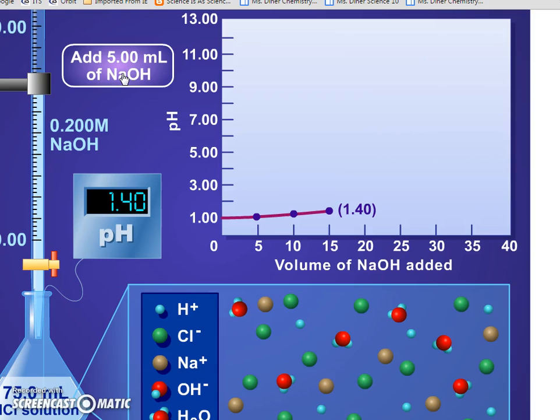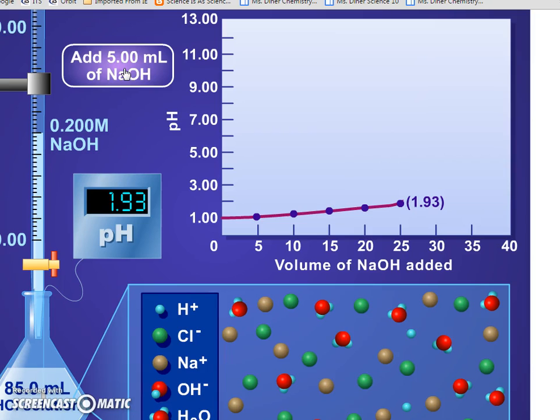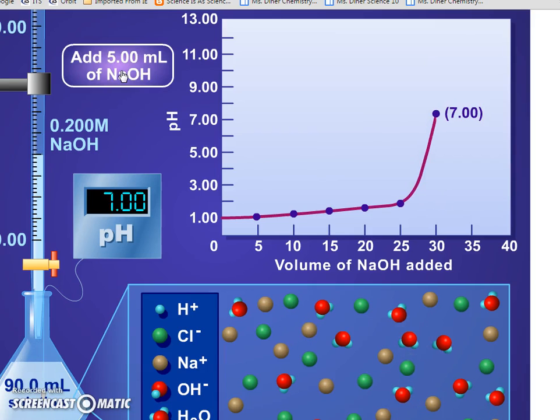The only thing affecting the pH is the free hydrogen ions in solution, so pH stays really low. Add another five milliliters—same thing, picking up more hydrogen ions. We have just a couple free hydrogen ions, and those are dominating the pH because everything else has no effect. Add five more, and now all the hydrogen ions have been picked up.